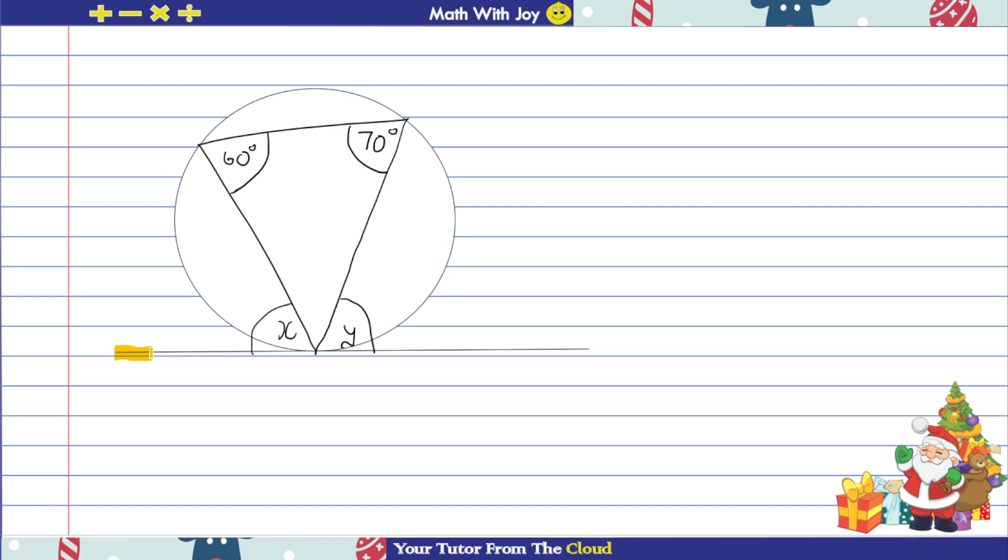We know what a tangent is - it's a line that touches the circle at only one point. And you have a chord. Now we know what a chord is - it's a line drawn inside a circle that goes from one end of the circle to the other end of the circle, so circumference to circumference.